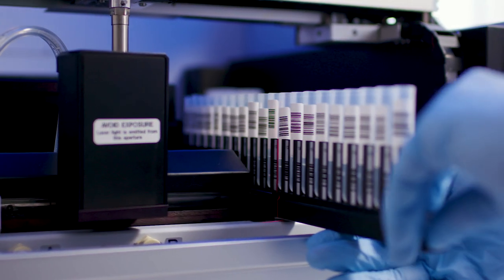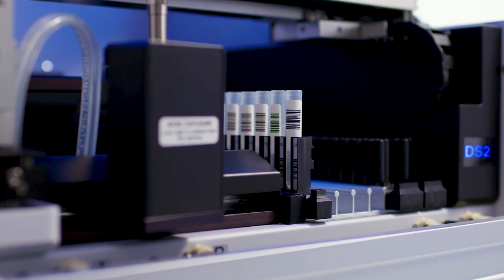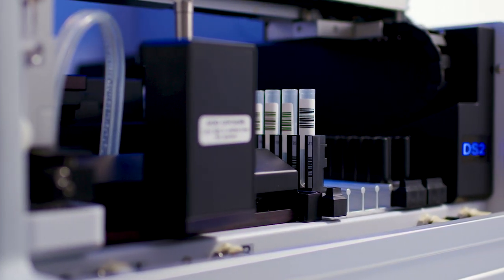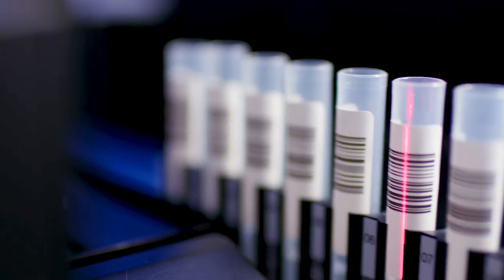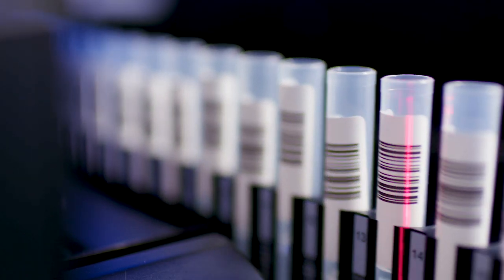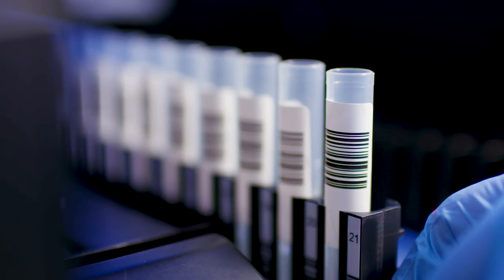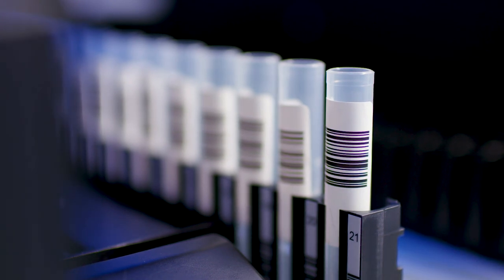The automation setup begins with the instruction to load the samples. The DS2 barcode scanner will automatically detect the sample barcodes as these are loaded onto the system and enter these onto the run file. This ensures full traceability from samples to results and minimizes any opportunity for human error.